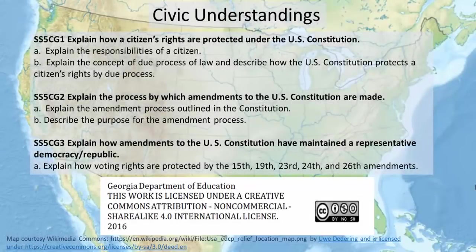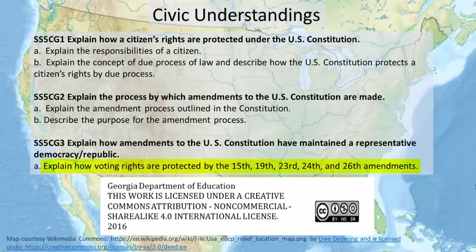This Georgia Department of Education screencast is intended to provide teachers of 5th grade social studies with content knowledge to aid in the teaching of the Georgia Standards of Excellence. In this screencast, we will look at what it means to be a U.S. citizen, including the rights every U.S. citizen is guaranteed under the United States Constitution, and a few of the amendments that have been found necessary over the years to ensure those rights are protected for everyone. We will also look at the process by which our Constitution can be amended and spend some time going over just a few of the many responsibilities a U.S. citizen has.